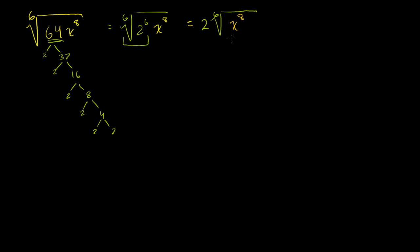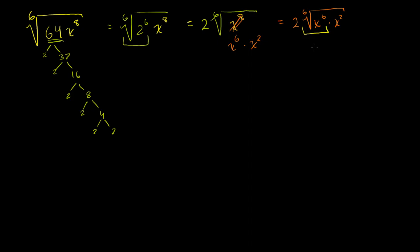How can we simplify the sixth root of x to the eighth? Well, x to the eighth is the same as x to the sixth times x squared — if you have the same base, you add the exponents, and 6 plus 2 equals 8. So this becomes 2 times the sixth root of x to the sixth times x squared. The sixth root of x to the sixth is just x, so this equals 2 times x times the sixth root of x squared.